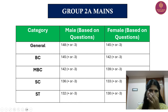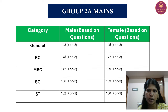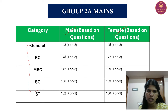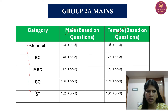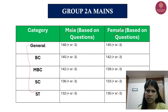For Group 2 Mains, for example, if you are male or female, you can also use a category. The category includes one for differently-abled people.